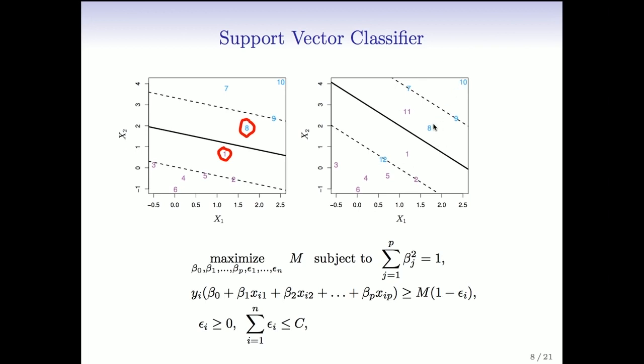We've got a blue point on the wrong side of its margin over here. We've got a blue point on the wrong side of the decision boundary and on the wrong side of the margin. Likewise, there's a mauve point on the wrong side of the decision boundary, also the wrong side of the margin. So these are called soft margins.